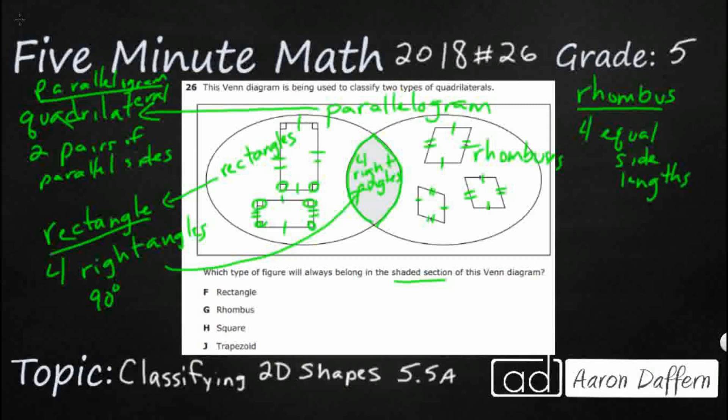Sometimes we'll call a rhombus a diamond, but that's not an actual shape name. So what happens here in the middle needs to have four right angles and, I'm going to kind of draw down here, I'm out of room, four equal sides. Four equal side lengths plus four right angles.